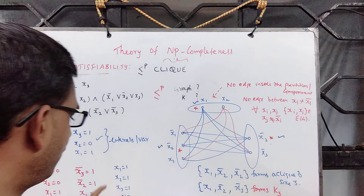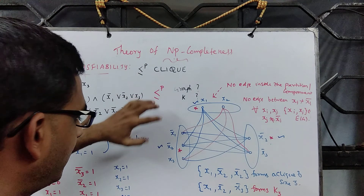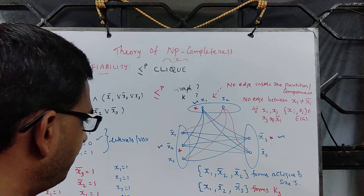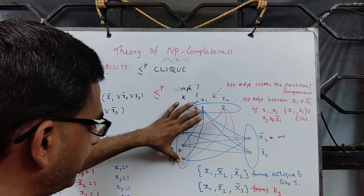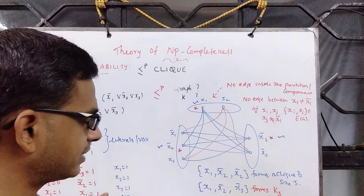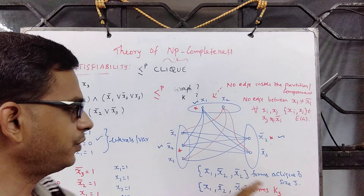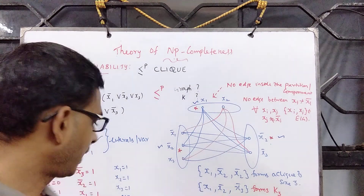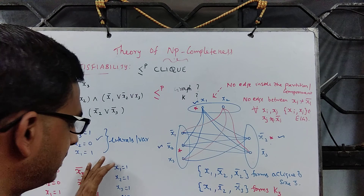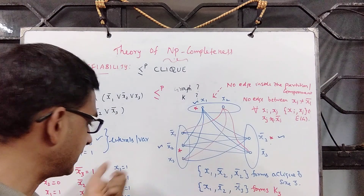For this truth assignment, you look at x1, and we know that x2 bar is 0 and x3 is set to 1. So you get x1 and x3. But from this clause, you cannot pick anything because the formula is evaluated to false. Which means you cannot map that to a clique of size 3. This truth assignment evaluates the formula to false, and this ensures there is no clique of size 3 for this corresponding instance.